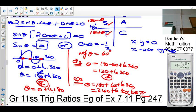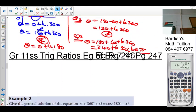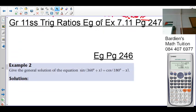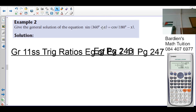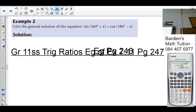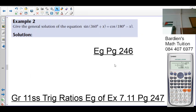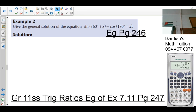So any confusion there? No? Here we get example 2. Example 2 is on page 246 as well. Here's the general solution of sin(360° + x) = cos(180° - x).